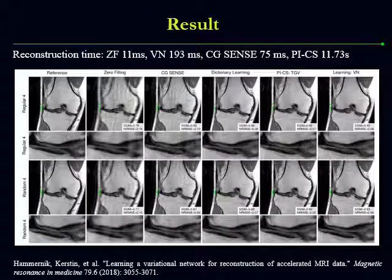These are the reconstruction results given by variational network and other measures. As you can see, the learned network can generate images closer to the ground truth, which has sharper edges and better artifact removal effect. The enlarged region is also closer to the reference image.